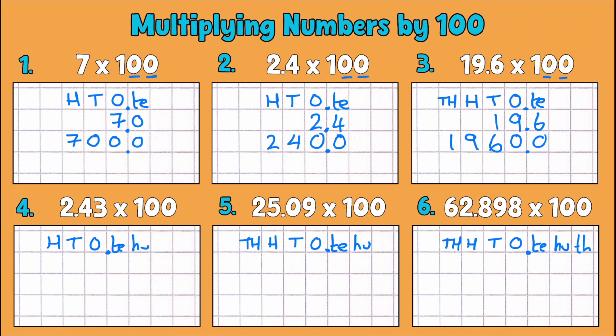So our next example here is 2.43. So now we've got some hundredths as well. So 2.43 multiplied by 100. So we're going to try the exact same thing. So popping our decimal place in there.